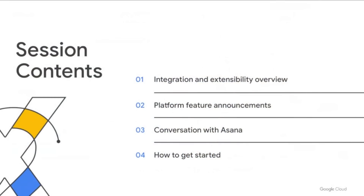There's a lot to share about the platform, and today I'll split that discussion into four topics. First, I'll share the overall vision and approach we are taking to building Google Workspace as a platform. Next, we'll walk through the latest platform updates. Then I'll chat with Strand Sybester, a product manager from Asana, who will share how Asana is building on Google Workspace. Finally, I'll let you know how you can get started using the Google Workspace platform.